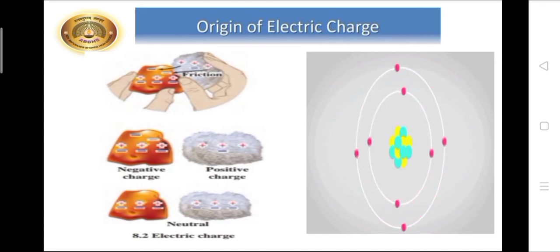So if an atom itself has no overall charge, it is neutral, then how do objects become electrically charged?